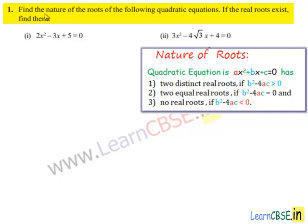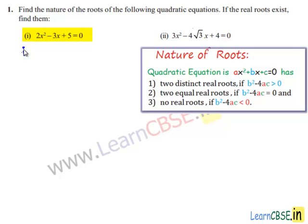Moving on to the first problem: find the nature of the roots of the following quadratic equations. If the real roots exist, find them. The first equation given is 2x² minus 3x plus 5 is equal to 0. On comparing this equation with the standard equation ax² plus bx plus c is equal to 0,